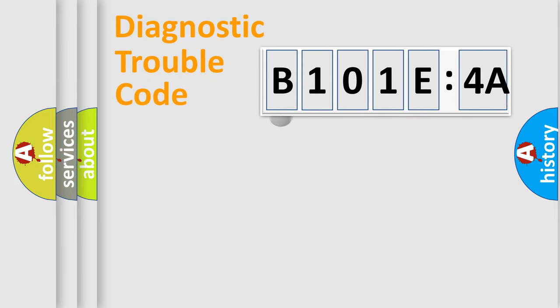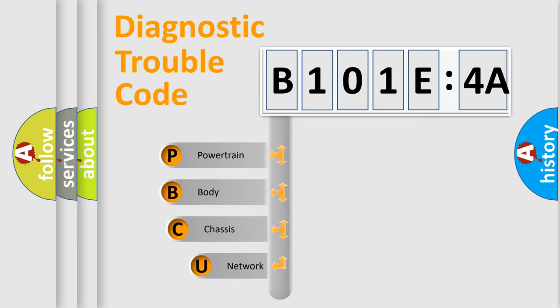First, let's look at the history of diagnostic fault code composition according to the OBD2 protocol, which is unified for all automakers since 2000. We divide the electric system of automobile into four basic units.